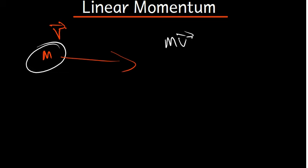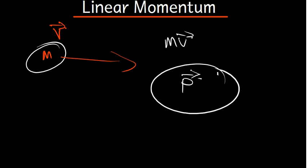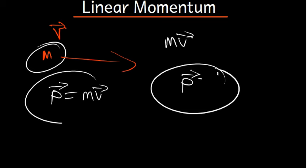This momentum is represented by the symbol P. Momentum is a vector — it can be negative or positive. A vector is a physical quantity which has both magnitude and direction. So momentum being a vector, we know that it can be negative or positive. We are saying that momentum P is equal to mass times velocity. So this is the momentum.